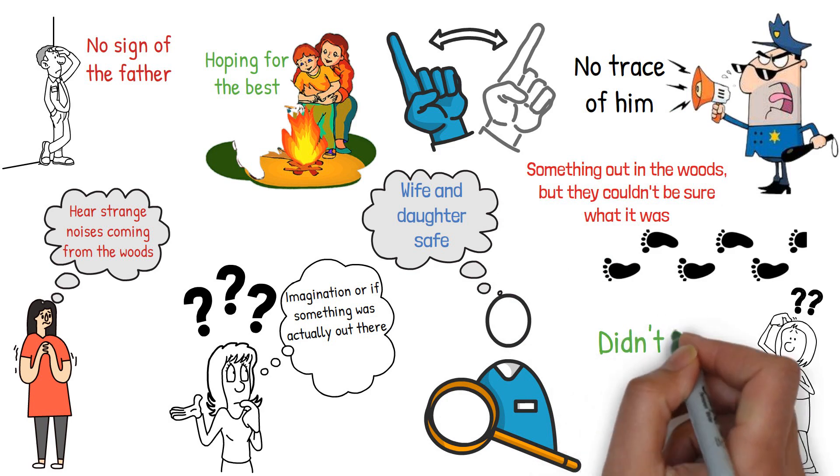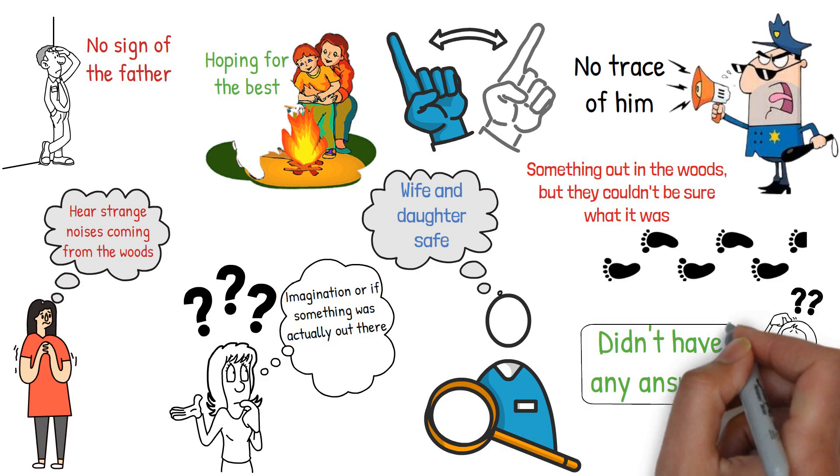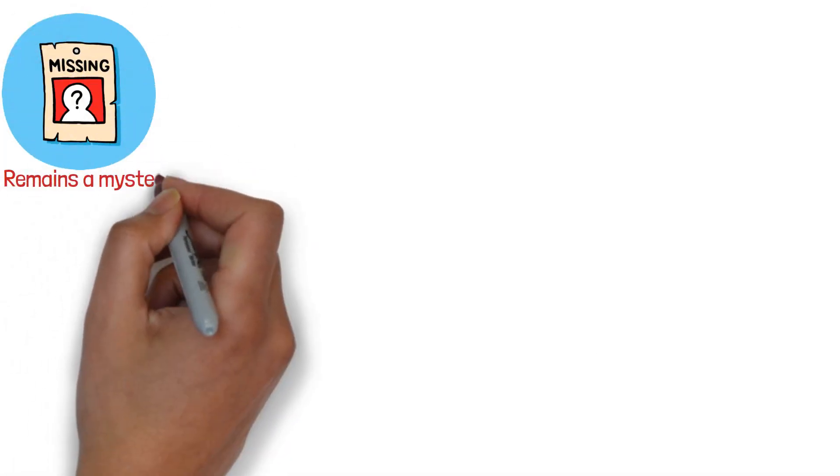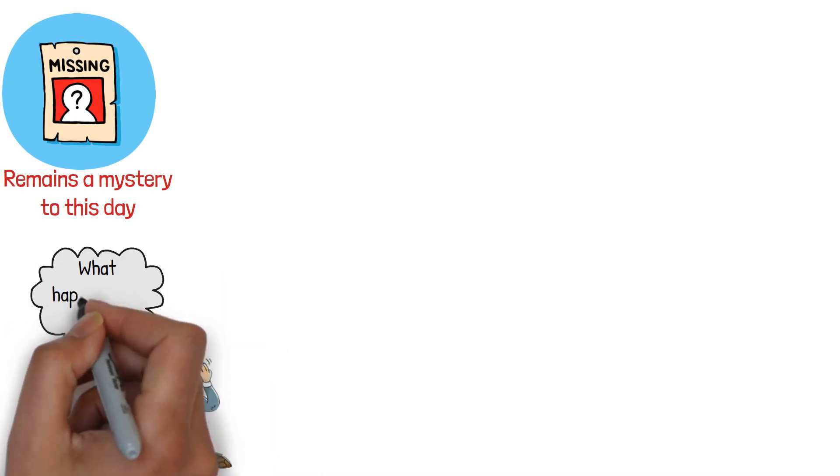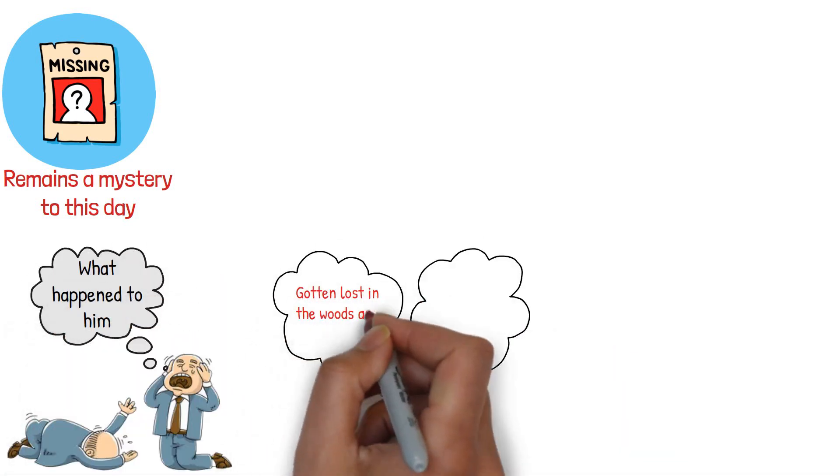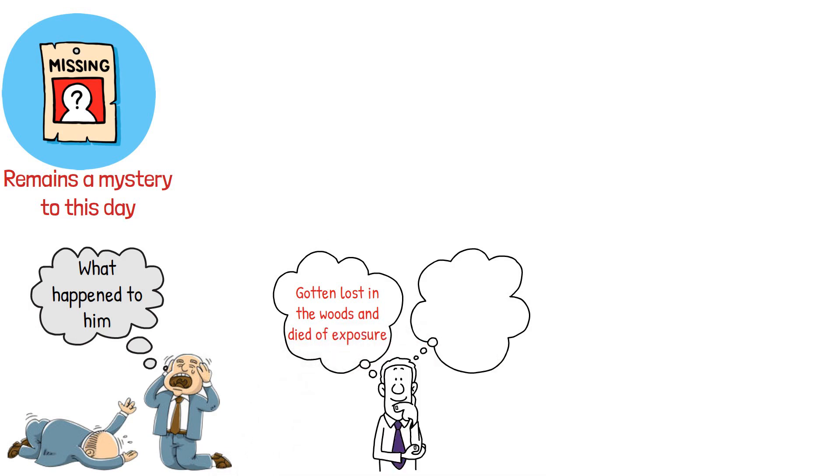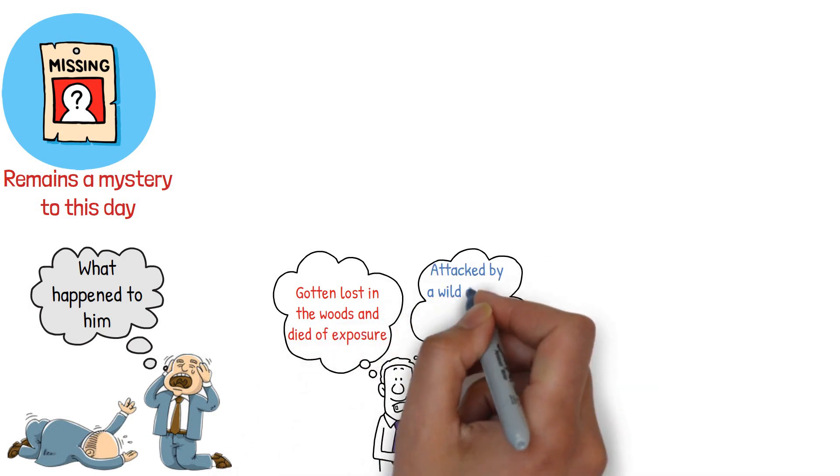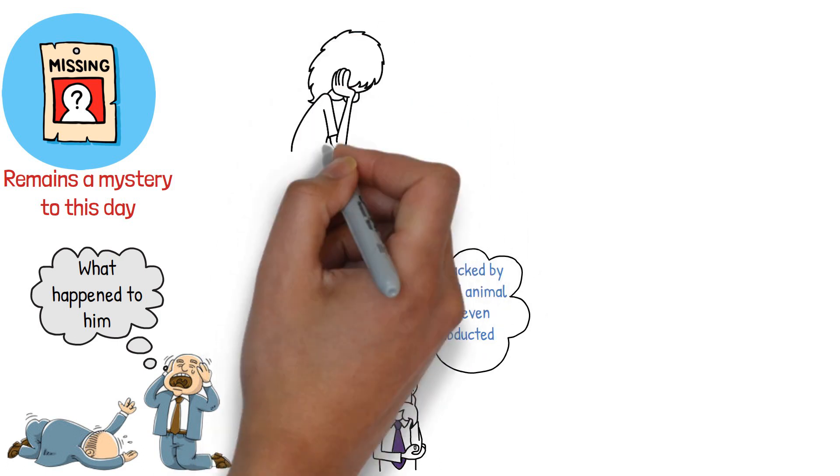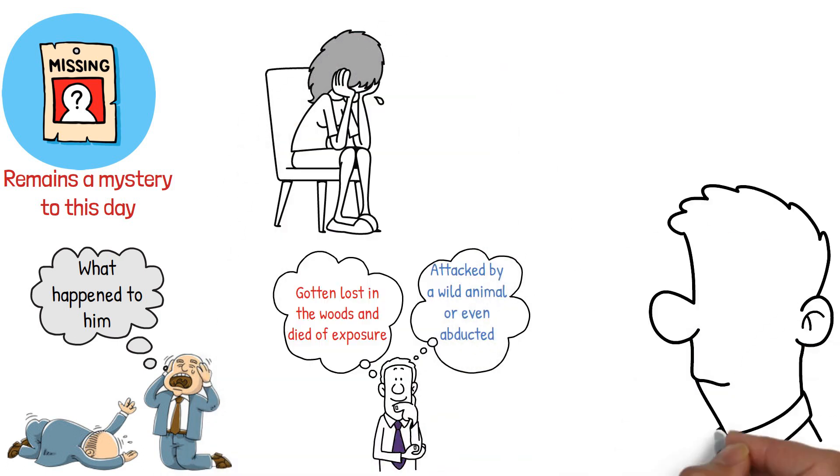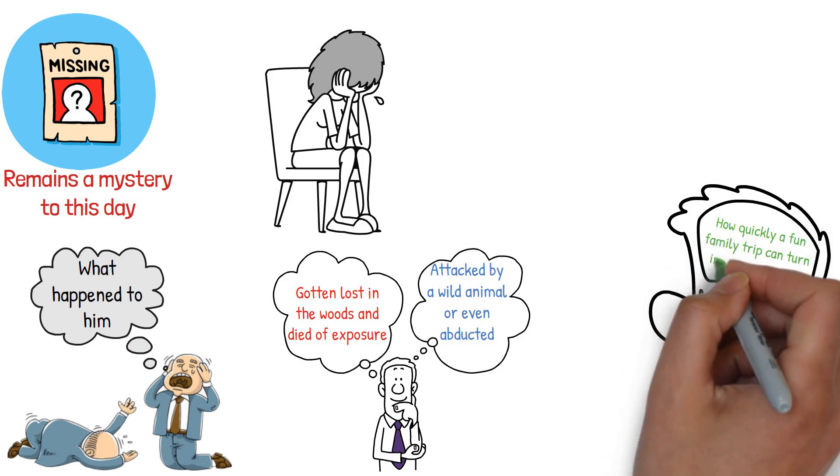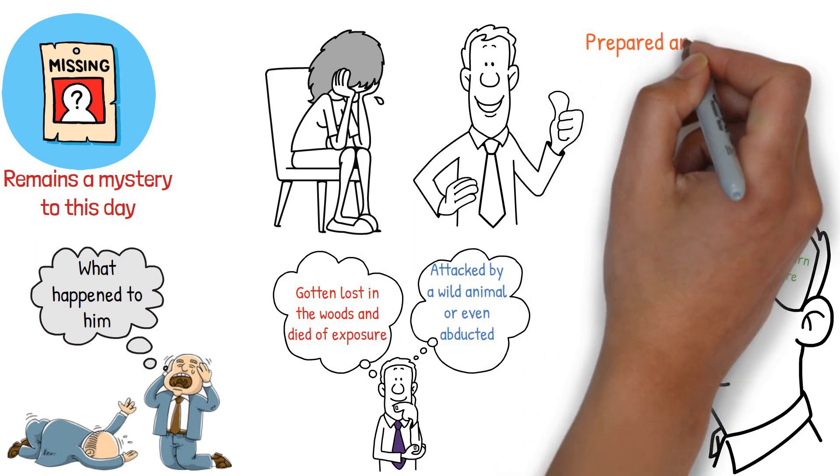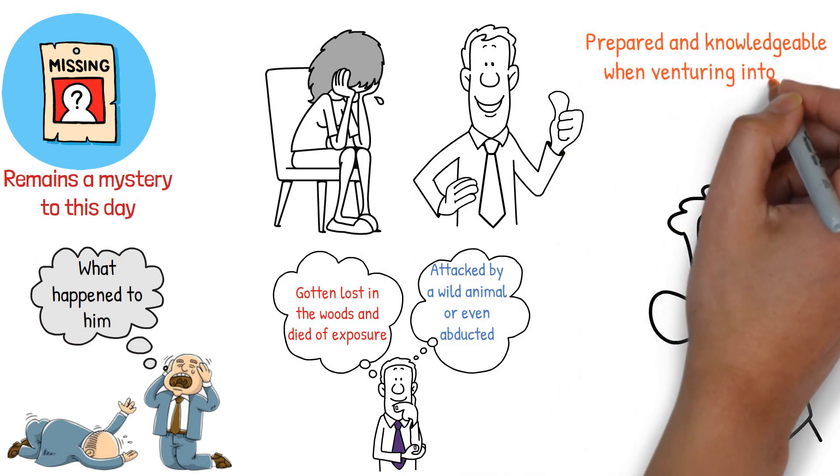The wife and daughter were questioned extensively, but they didn't have any answers. The case of the missing father remains a mystery to this day, leaving his family with the heartbreak of not knowing what happened to him. Some believe that he may have gotten lost in the woods and died of exposure, while others speculate that he may have been attacked by a wild animal or even abducted. The family may never know the truth, but the incident serves as a reminder of how quickly a fun family trip can turn into a nightmare. It also highlights the importance of being prepared and knowledgeable when venturing into the wilderness.